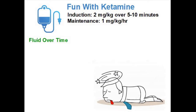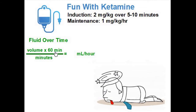Our first calculation is going to be fluid over time. When you pull the reference card out of your pocket, you'll see fluid over time is the volume of fluid given times 60 minutes in order to convert it into an hour, divided by the total number of minutes in which you're going to run it. That gives you an end result of milliliters per hour, which is what we program our IV pump to run.